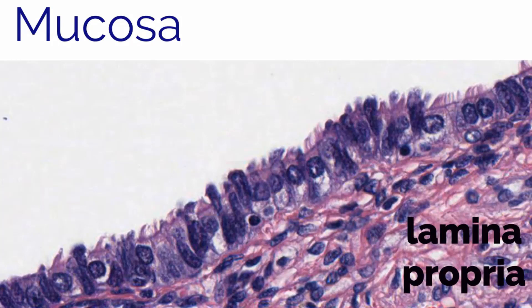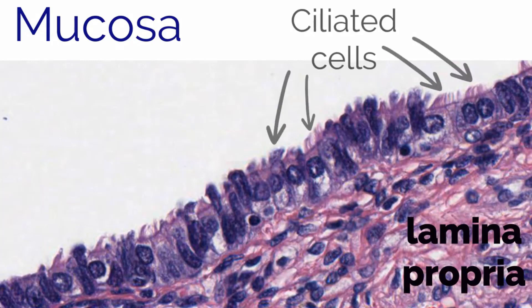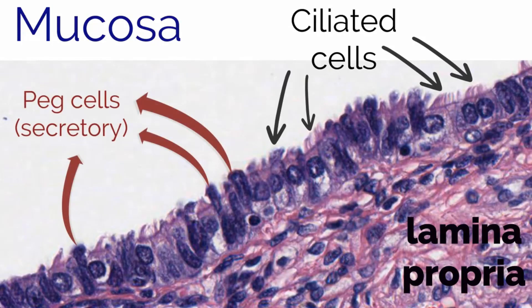This epithelium has two types of cells. The first type are ciliated columnar cells to aid in egg transport. The second are peg cells, which are non-ciliated secretory cells that produce substances providing protection and nutrition for the egg and sperm.